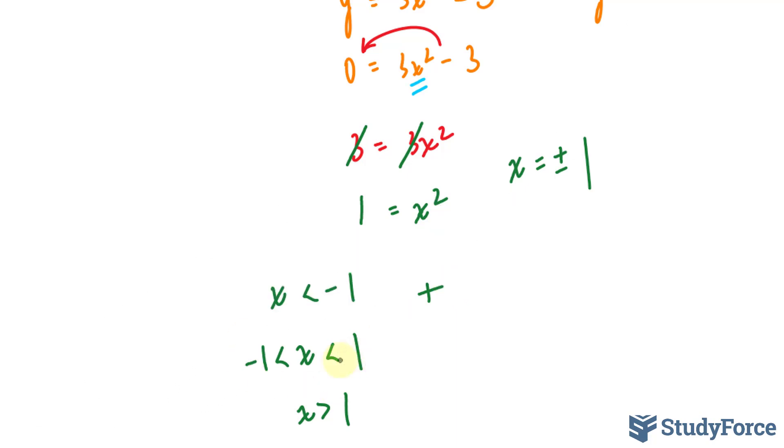Similarly, I'm going to pick a number that is between negative 1 and 1, and the easiest number to pick is 0. I don't need my calculator for that, and I know if I put 0 into here I get negative. And finally, if I put a number greater than 1, let's say 2 into here, I'll get a positive number. So we have plus minus plus.